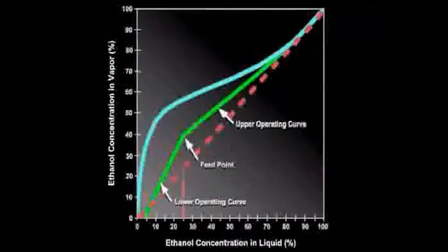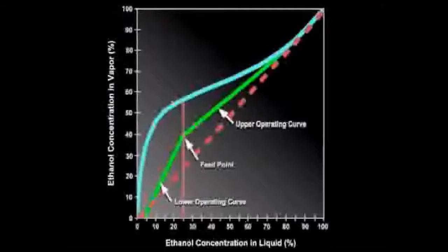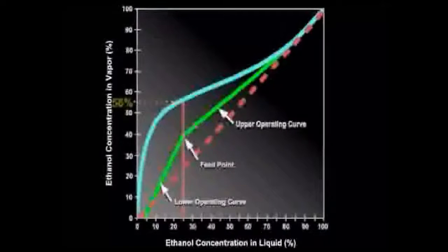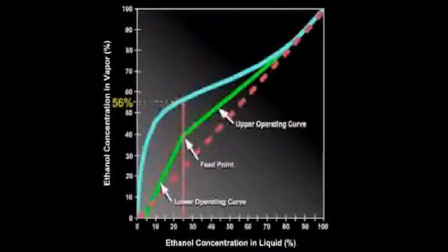Suppose our feed stream is 25% ethanol. The vapor coming off the feed stage is 56% ethanol. What is the concentration of the liquid mixture in the stage above the feed stage?